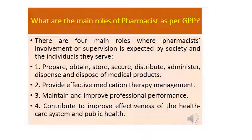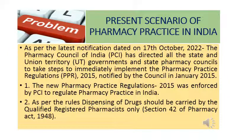What are the main roles of the pharmacist as per Good Pharmacy Practice? There are four main roles where pharmacist involvement or supervision is expected by society and the individuals they serve. Number one, prepare, obtain, store, secure, distribute, administer, dispense, and dispose of medical products. Number two, provide effective medication therapy management. Number three, maintain and improve professional performance. Number four, contribute to improve effectiveness of the healthcare system and public health.